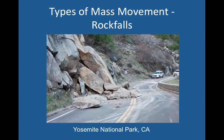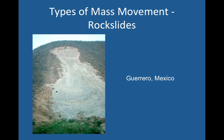There are several different types of mass movement. The first is rockfalls, where rock falls down fairly vertically. Then we have rockslides, when the rock slides down a hill.